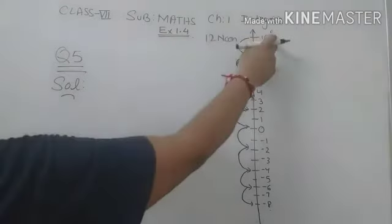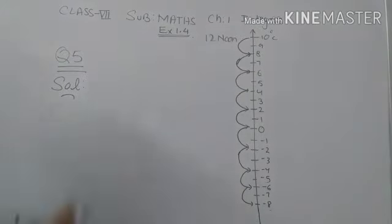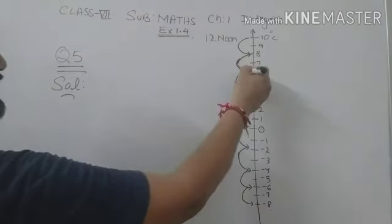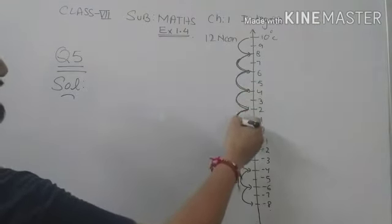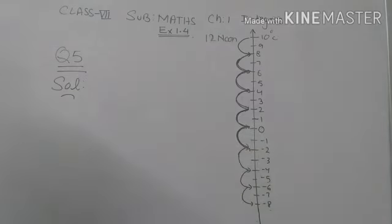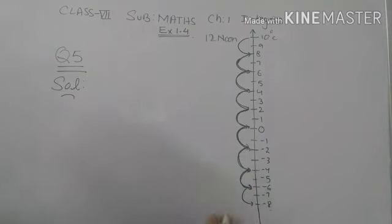At 12 noon, temperature is 10 degrees centigrade. After 1 hour, temperature decreases 2 degrees centigrade, so it reaches 8 degrees centigrade. After the second hour it reaches 6, then 4, then 2, then 0, then minus 2, then minus 4, then minus 6, and last it reaches minus 8. This is our answer point.